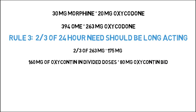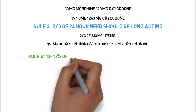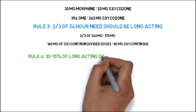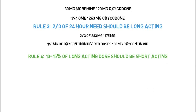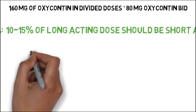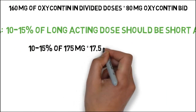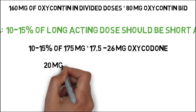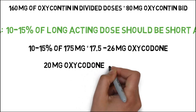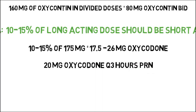Finally, rule four states that 10–15% of the long-acting dose is used for short-acting intermittent dosing. Ten to 15% of 175 mg equals 17.5–26 mg of oxycodone. For ease of dosing with available tablets, we plan to use 20 mg of oxycodone every three hours as needed for breakthrough pain.